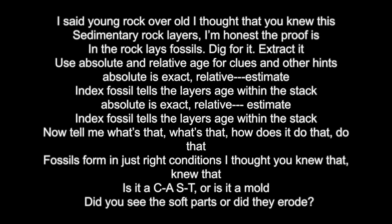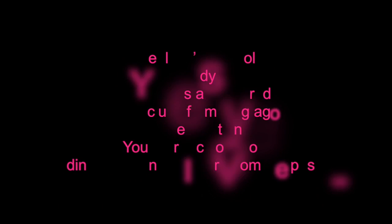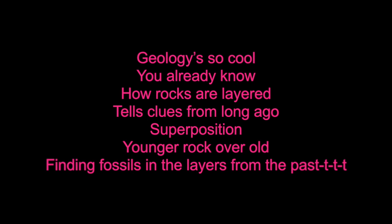Young rock overall — rock layers, I'm honest. The proof is in rock layers. Fossils — dig for it, extract it, use absolute and relative dating for clues. Absolute is exact, relative is an estimate. Index fossils have a layer's age within the stack. Absolute is exact, relative is an estimate. Index fossils has a layer's age within the stack. Conditions for fossil formation — is it a cast or is it a mold? Did you see the soft parts or do they erode? Geology is so cool.